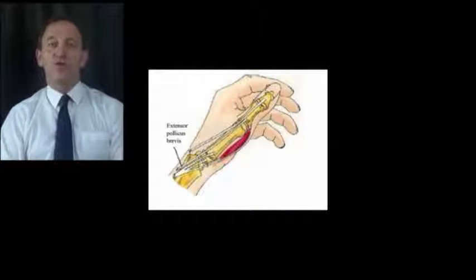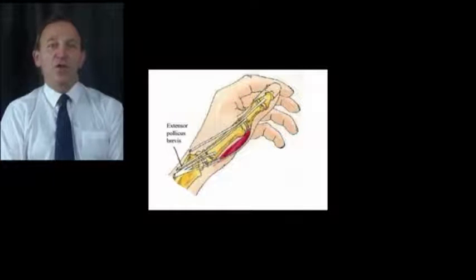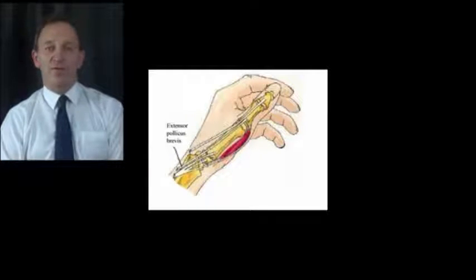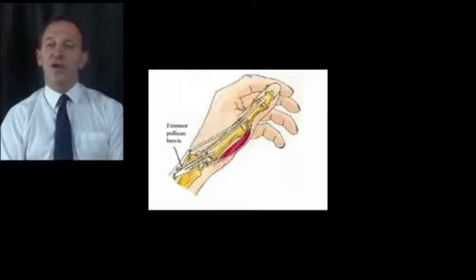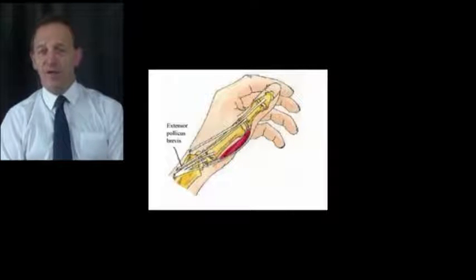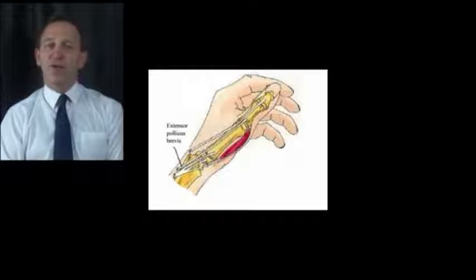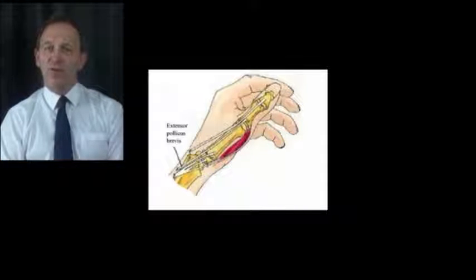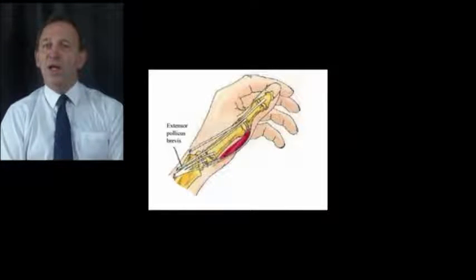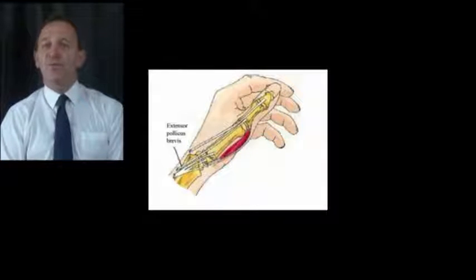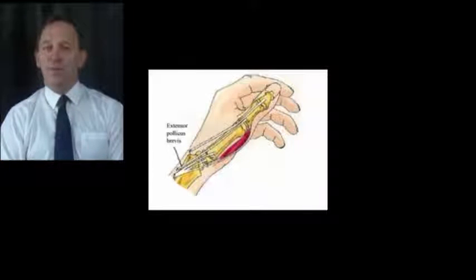We'll next discuss two other common soft tissue problems in the hand and wrist: De Quervain's tenosynovitis and trigger finger. De Quervain's tenosynovitis, named after Fritz de Quervain, a Swiss surgeon who first described it in 1895, is inflammation affecting the tendon of the abductor pollicis brevis or extensor pollicis longus. It presents as pain across the radial side of the wrist and lower forearm, and is seen after pregnancy and also in people who use their wrists and arms excessively for computer use or other repetitive movements.